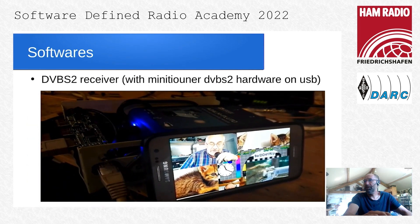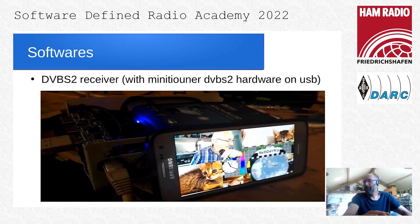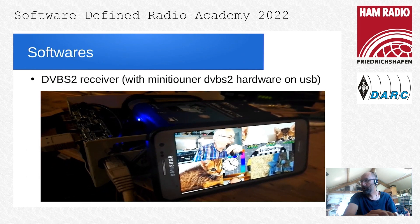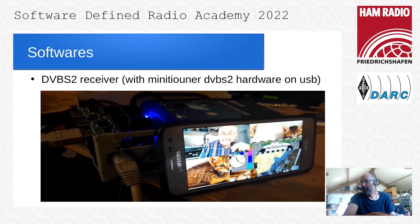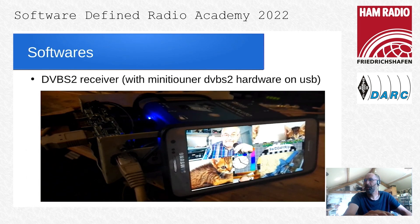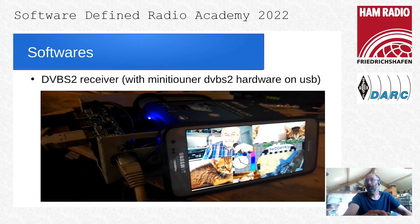This is a DVB-S2 receiver. Normally the receiver is done using hardware called MiniTiouner, which runs on Windows. Here the MiniTiouner is plugged directly on the USB hub of the Pluto, and it uses the longmynd Linux software which is forked to work with MQTT. With that, the phone is just receiving the transport stream video through Wi-Fi and playing back the VLC application on it.